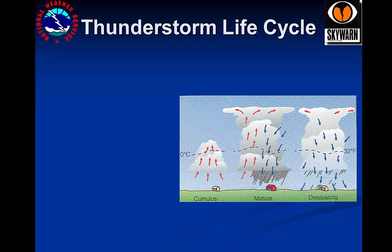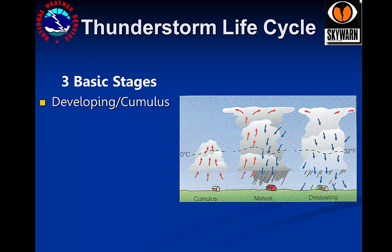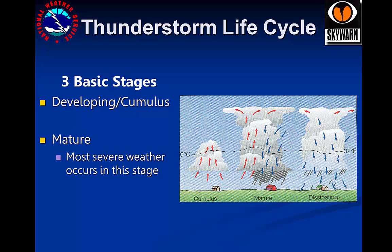There are three stages of thunderstorms. The first is the developing cumulus stage, dominated by updrafts — dry and building. A mature storm has updrafts and downdrafts, with the top of the storm peaking up, sometimes toward the stratosphere, and forming an anvil as it freezes and spreads horizontally. This is when severe weather phenomena such as hail, tornadoes, and heavy rain are most likely. The dissipating phase has a storm dominated by downdrafts, with gusty downburst winds most likely as the storm collapses. Hail and rain may still continue through this phase, but tornadoes are not likely.